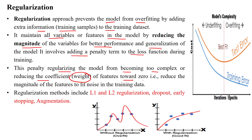When we apply a decrease of those coefficient values, which reduces the magnitude of the features, it helps the model fit nicely on the training data.